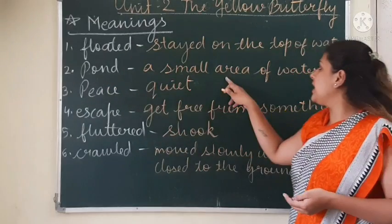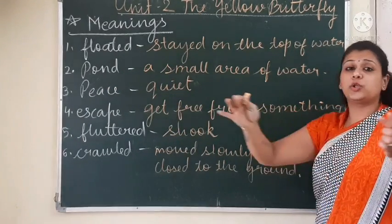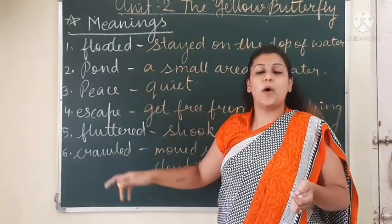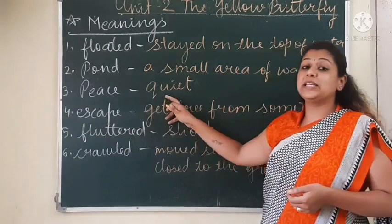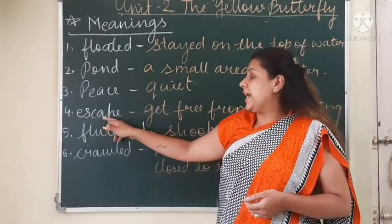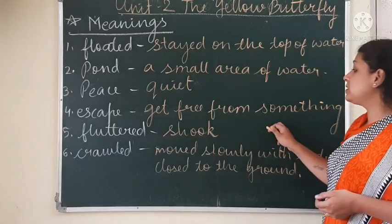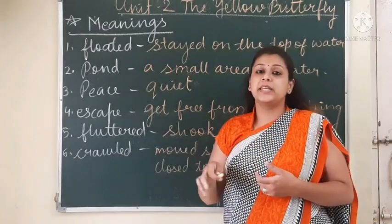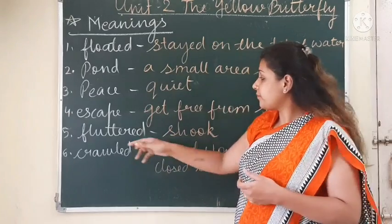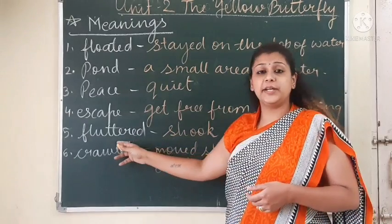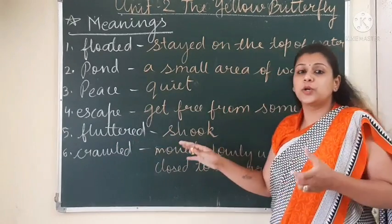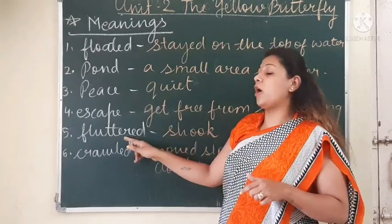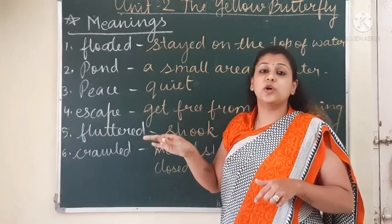Pond means a small area of water. Escape means to get free from something — that is, to break free or run away from someone. Fluttered means the flapping sound and movement of wings — the fad-fad motion of the butterfly, that is called fluttered — the sound of wings.